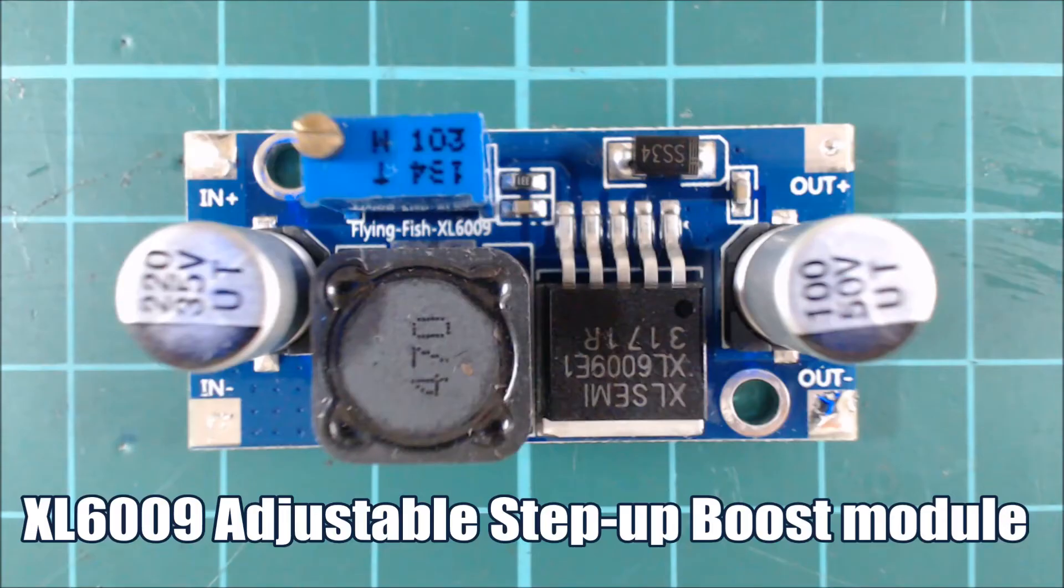The step up boost module is also cheap and easy to obtain. This one has an XL6009 chip and it boosts voltage up to 35 volts. The battery is connected to the in terminals on the left and the lamp to the out terminals on the right. The screw on the blue component is used to adjust the output voltage. You can also buy these with an LED display on board which shows the output voltage.